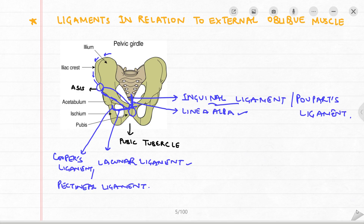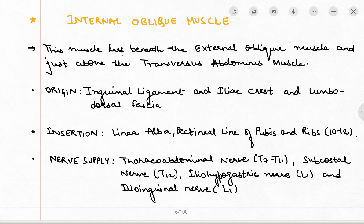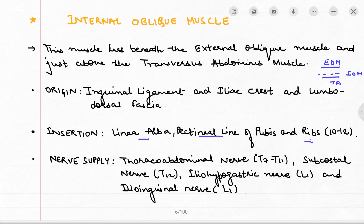The internal oblique muscle lies beneath the external oblique and just above the transversus abdominis. Its origin is from the inguinal ligament, iliac crest, and lumbosacral fascia. The insertion is into the linea alba, pectineal line of pubis, and the 10th to 12th ribs. The nerve supply is T7 to L1.